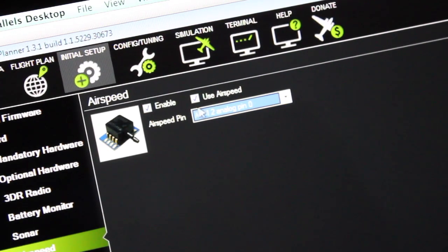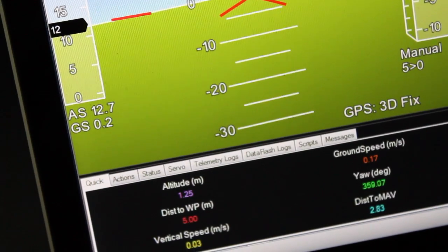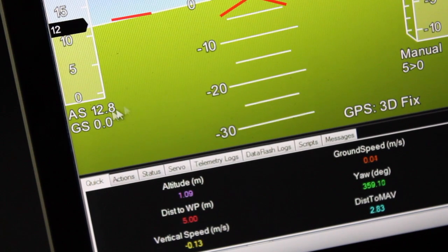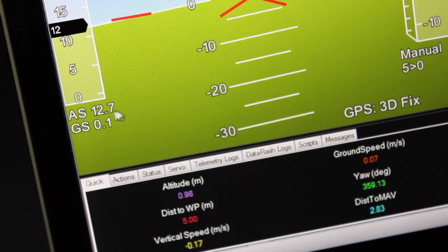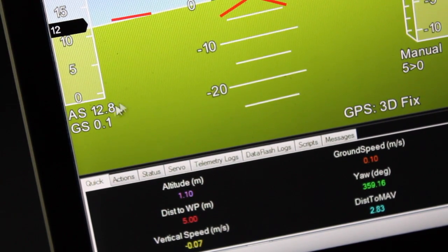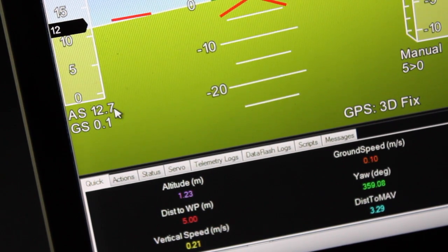So as we click those values those get sent to the board. Now looking at the flight data screen and that default value is close to 13 meters per second. Now we know that's not accurate so this took me a little while to figure out when I did my first setup and I want to show you what you need to do next.